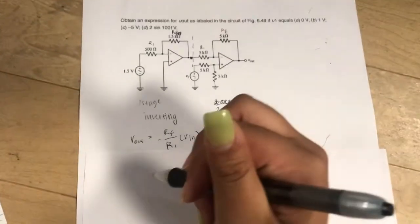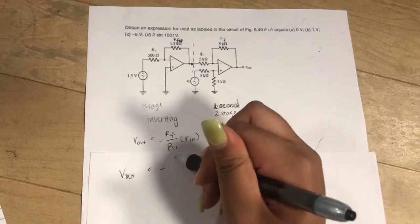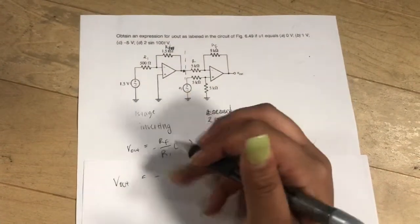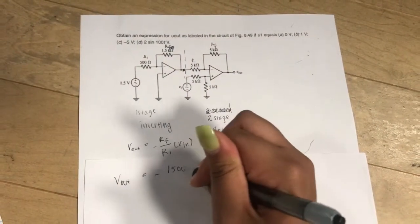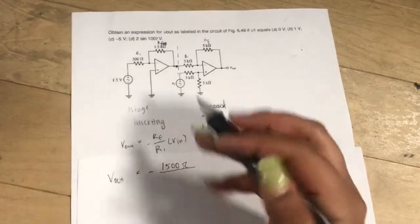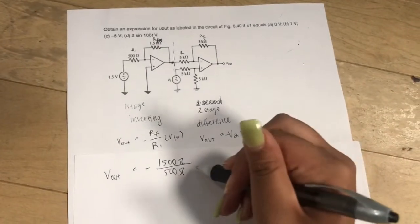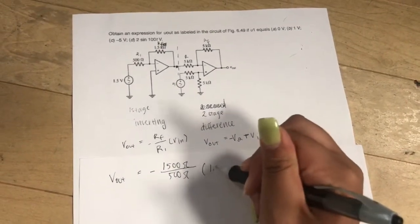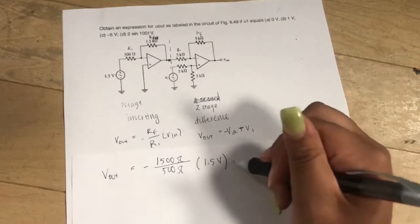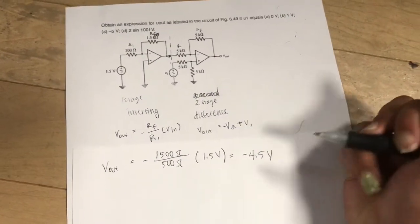It gives us the variables. So it's negative 1.5 kiloohms, which is 1,500 ohms, over 500 ohms times Vin, which is 1.5 volts. This comes out to negative 4.5 volts.